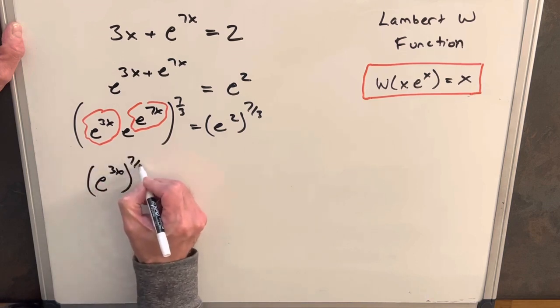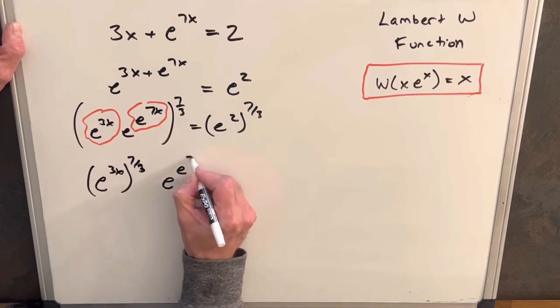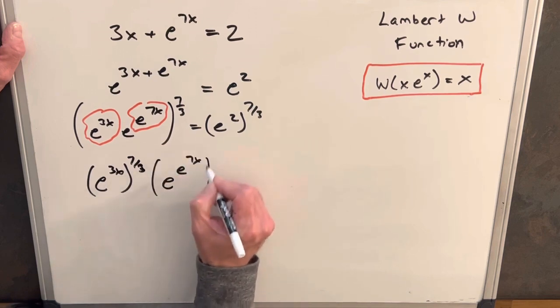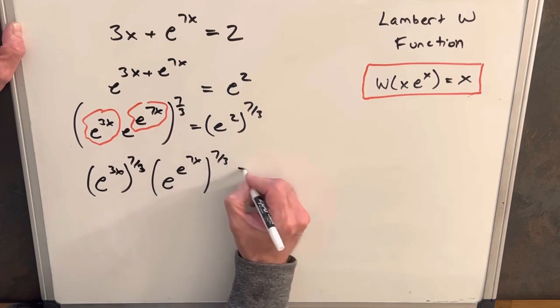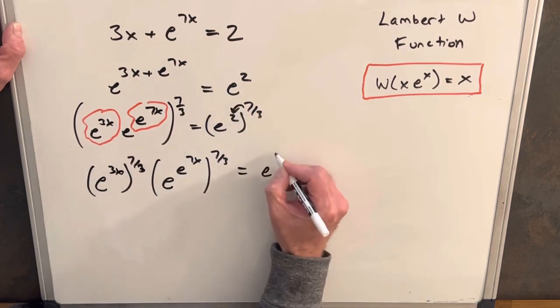So put e to the 3x to the 7 thirds here and then we'll have e to the e to the 7x to the 7 thirds. And then on the right side we'll actually just multiply this in. We'll have e to the 14 thirds.